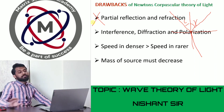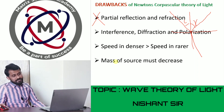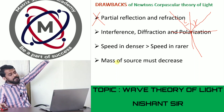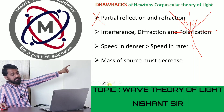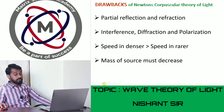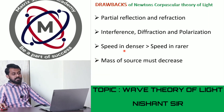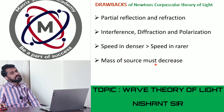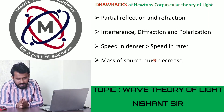A fourth drawback of Newton's theory is that if a bulb is emitting particles continuously, over time the mass of the source should decrease, but no such reduction in mass was ever observed experimentally. These were the main problems with Newton's corpuscular theory.